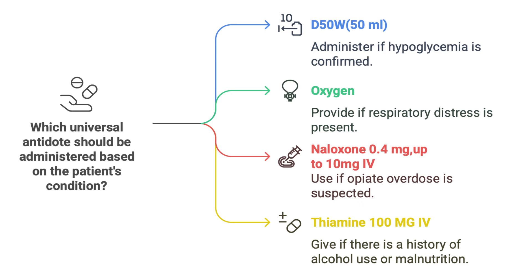Finally, Thiamine: thiamine deficiency is often seen in chronic alcohol abuse or malnutrition and can lead to Wernicke-Korsakoff syndrome — a serious brain disorder causing confusion, memory loss, and even coma. So DONT covers hypoglycemia, oxygenation, opioid reversal, and thiamine deficiency all at once. It's a brilliant mnemonic.